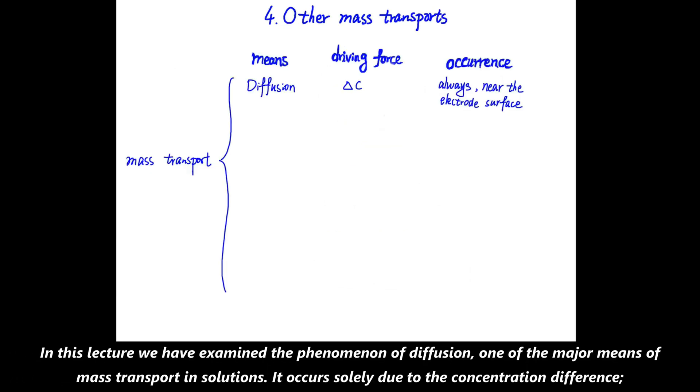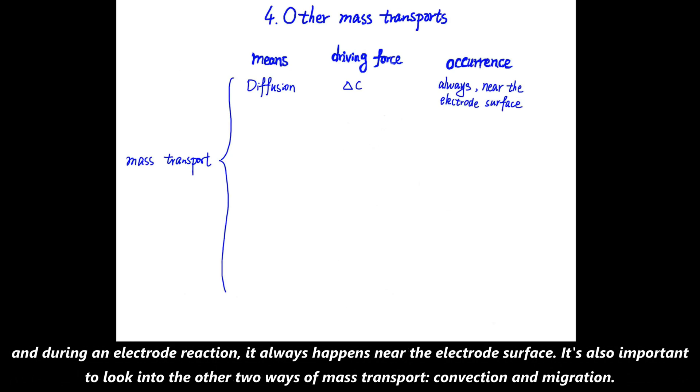In this lecture, we have examined the phenomenon of diffusion, one of the major means of mass transporting in solution. It occurs solely due to the concentration difference, and during an electrode reaction, it always happens near the electrode surface. It's also important to look into the other two ways of mass transport: convection and migration.